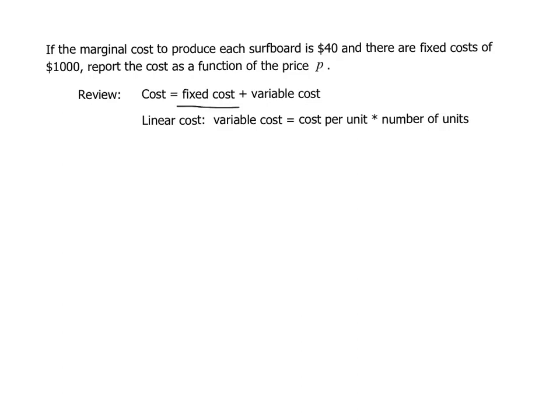From earlier chapters we know that cost can be separated into two parts: the fixed cost plus our variable cost. First of all we know from this problem that our fixed cost is $1000 because they told us that.